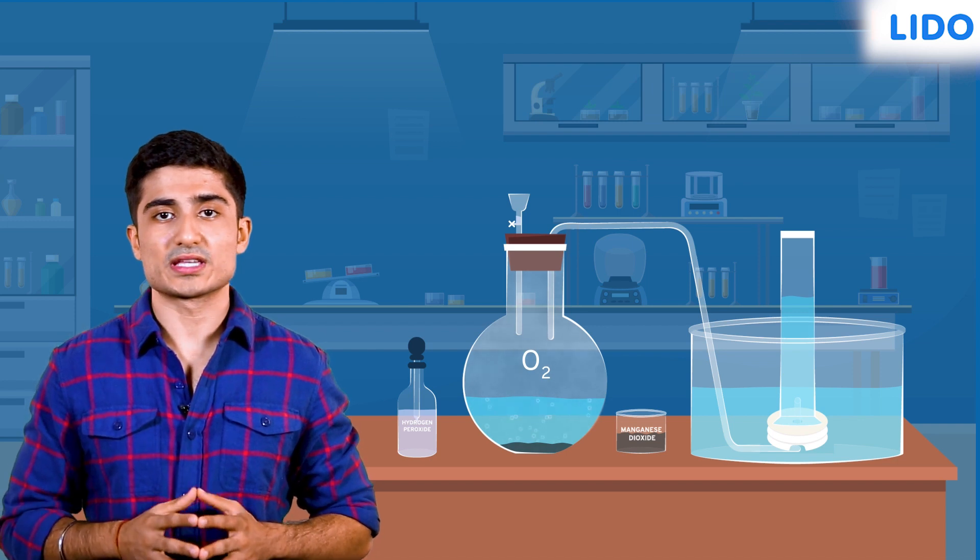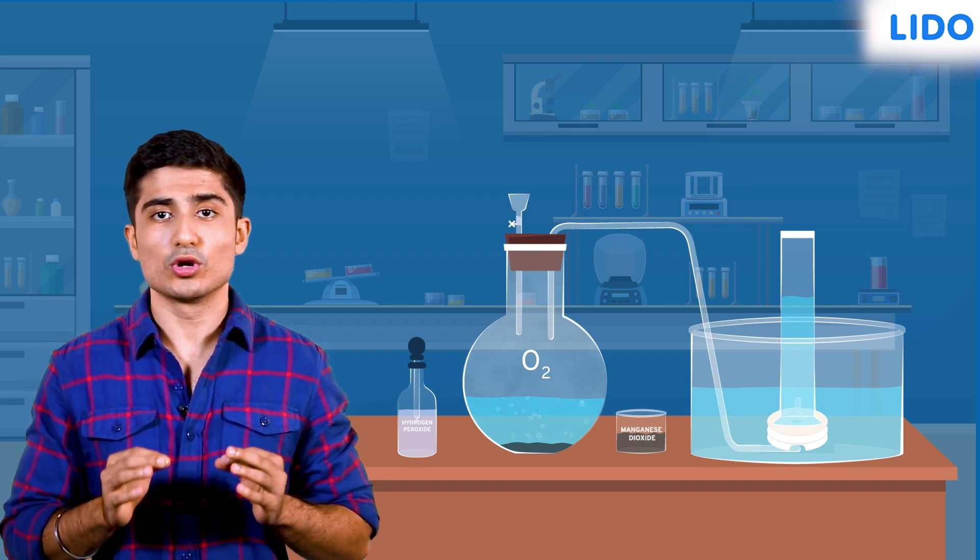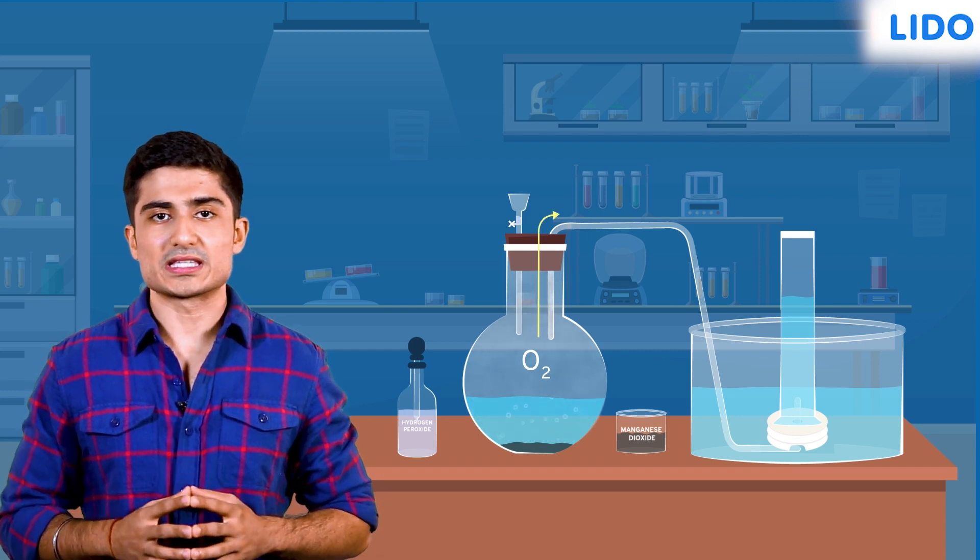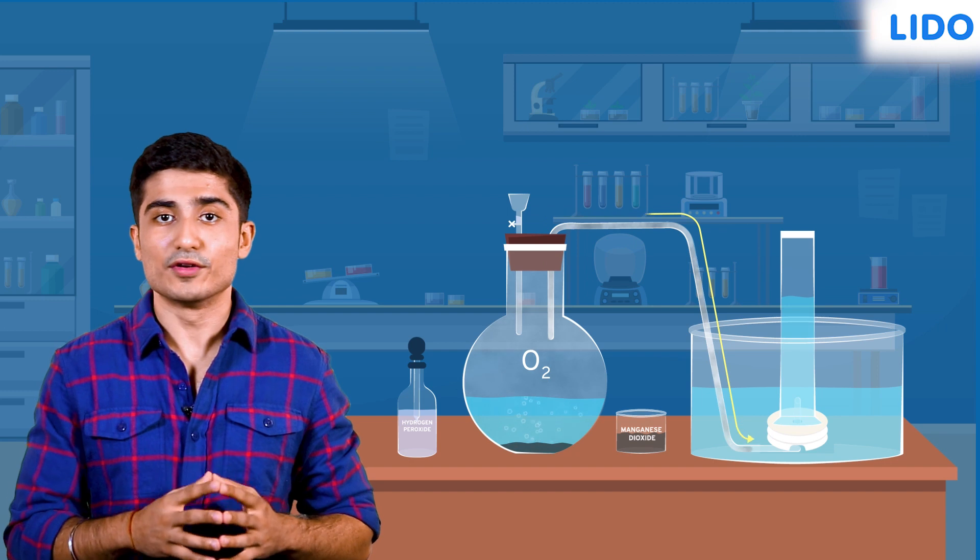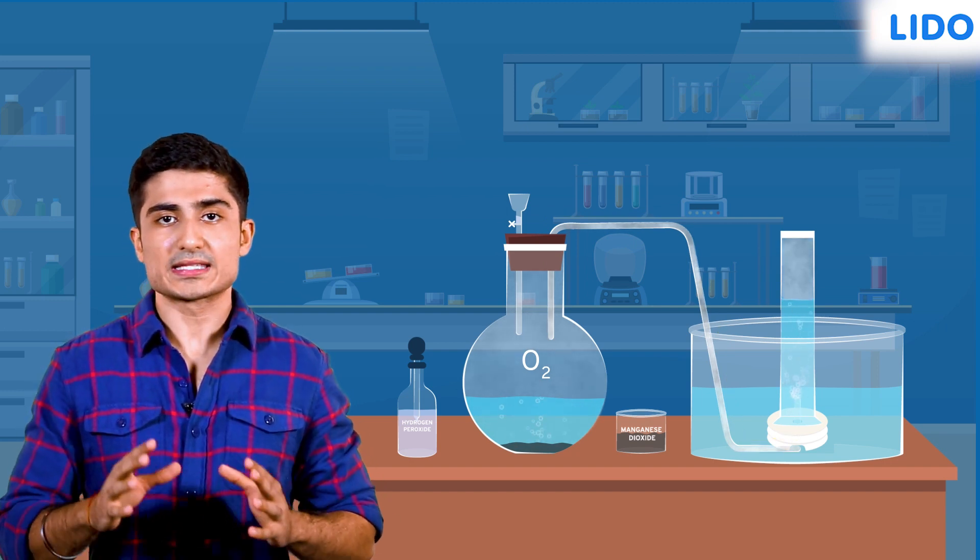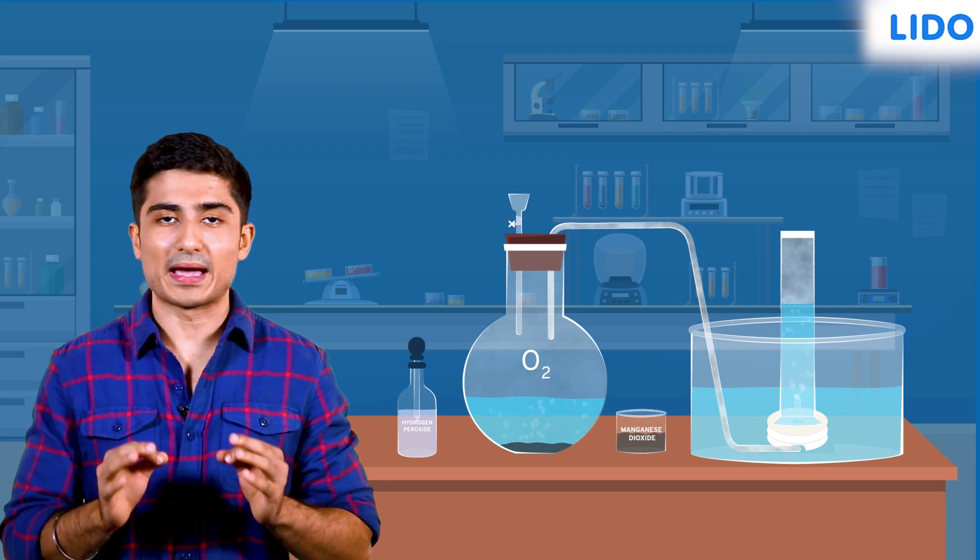Please note the manganese dioxide used here only performs the role of a catalyst to speed up the reaction. The oxygen gas passing through the delivery tube is collected in an inverted gas jar. All that remains behind in the flask is water and unreacted manganese dioxide.